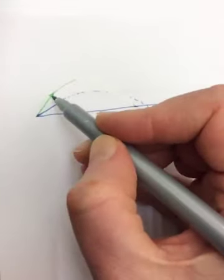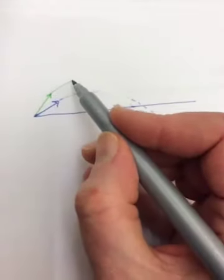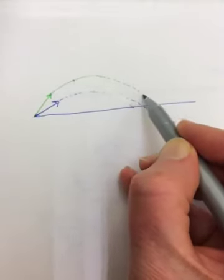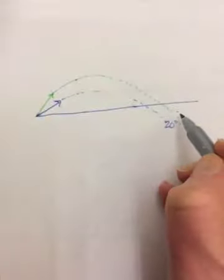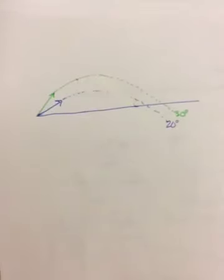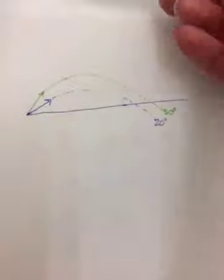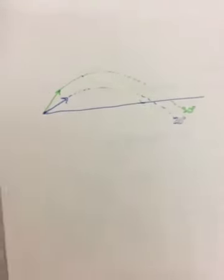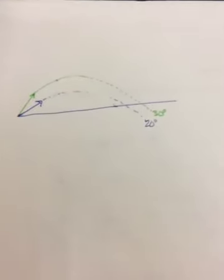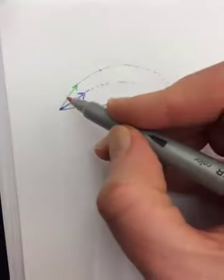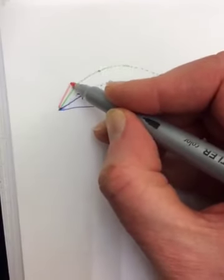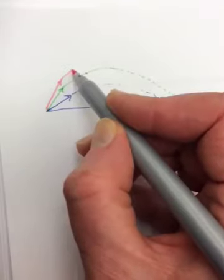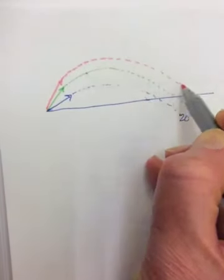So now let's make my angle bigger. Maybe I'll make it 30 degrees. So now the y component is bigger, and so it stays in the air longer, so we can go out further. If I make it bigger again, just trying to find different colors. If I make it bigger again, let's say this is 40.